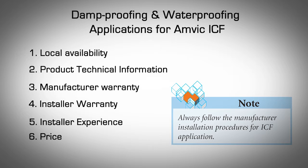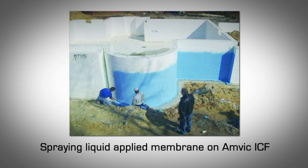Consider the following selection criteria. Local Availability: check with a local AMBIC distributor for appropriate product availability. Product Technical Information: ensure the product of choice has proper specifications, installation instructions, and meets local building code requirements. Manufacturer Warranty: the product manufacturer should offer a warranty against production deficiencies — some offer up to 30 years. Installer Warranty: the contractor should offer an installation warranty guaranteeing performance for a certain period. Installer Experience: ask your installer about their experience with the available products. Price: high-performance products will almost always cost more, so carefully weigh the benefits against the costs.